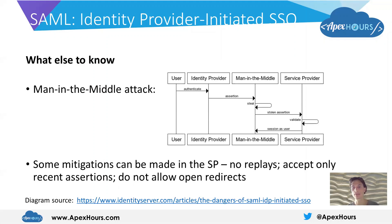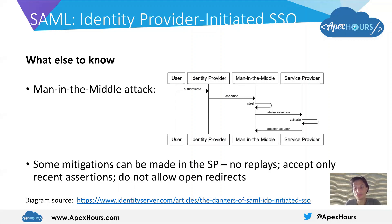If we have a man-in-the-middle that's capable of intercepting an assertion from the identity provider, they're able to use that assertion as if they themselves are the authorized user. The service provider isn't able to distinguish the man-in-the-middle from the authorized user. The assertion itself is completely valid — it's for a valid user, it's signed with the identity provider certificate, everything required — so it will validate and the service provider would issue a session to the man-in-the-middle.